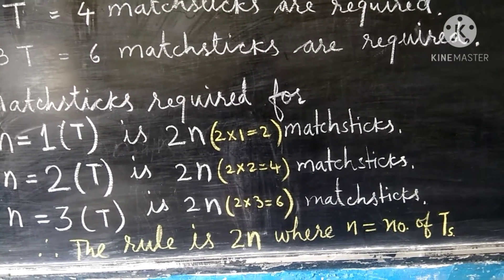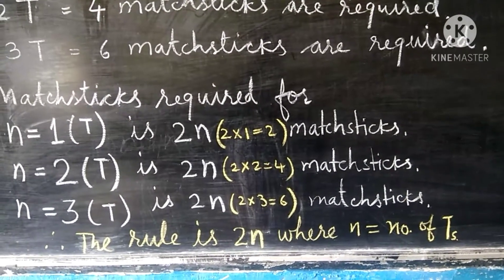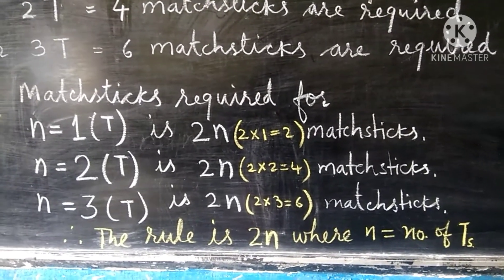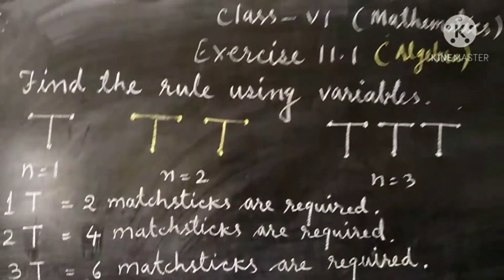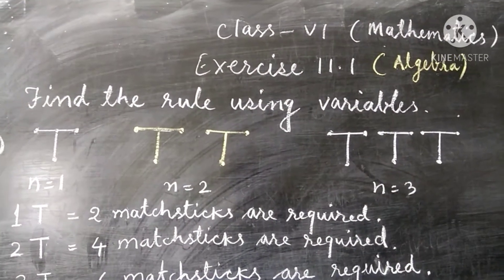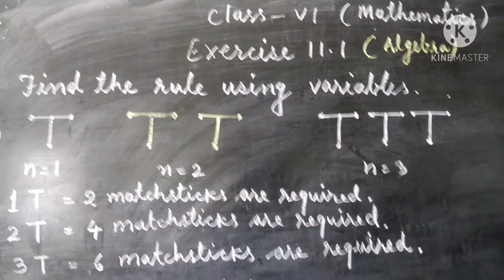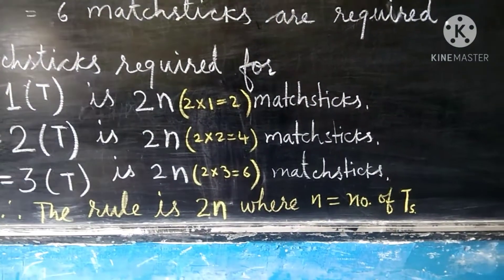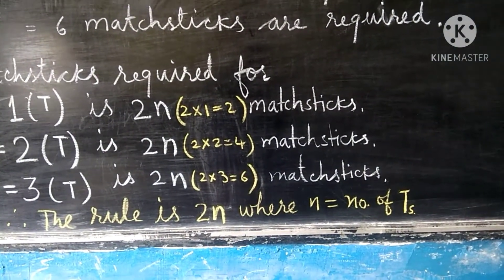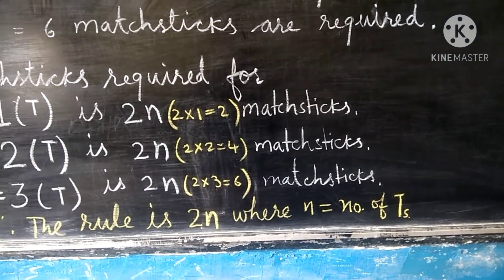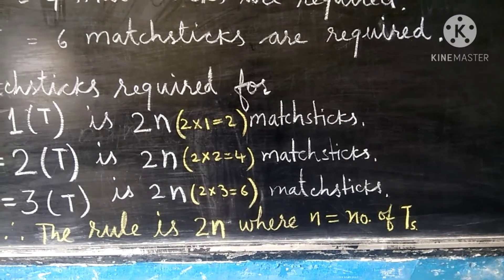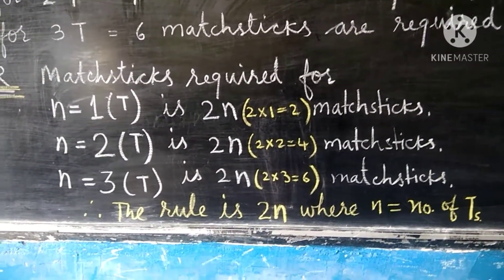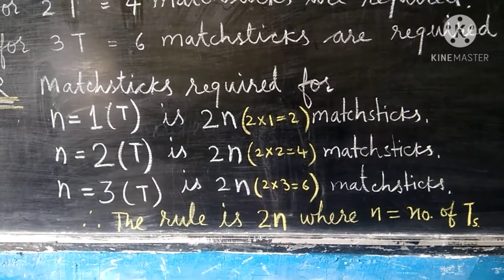We need two times n. For example, 2 into 3 is equal to 6 matchsticks. So the rule for this construction of T's is 2n, where n is equal to the number of T's. This is the method you have to do in your notebooks.